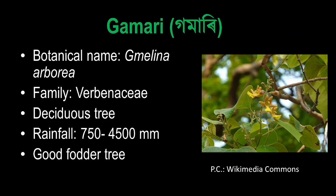Next, the tree is Gomari. This is the botanical name Melania and the family of the tree. It is a deciduous tree. The rainfall actually ranges from 750 to 4,500 mm. This timber is very important, and the timber value has a very important impact on other tangible benefits.